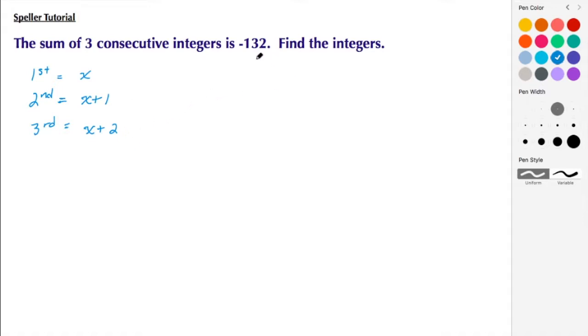All right, so we have our three expressions, and now we need to set up the equation. We know that we're doing the sum of these consecutive integers, so we're going to end up with X plus X plus one, which is the second one, plus X plus two, which is the third integer, and that's equal to negative 132.